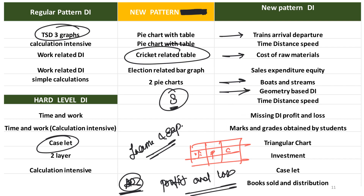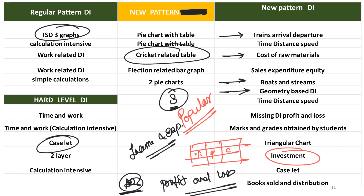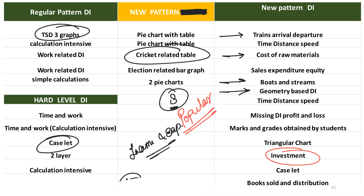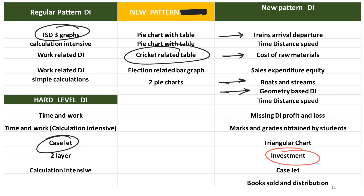There is also the possibility of marks and grades obtained by students — a little typical level, but you never know. Then you have triangular charts. Then you have investment-based questions, which are getting a little bit popular as far as management exams and bank-level exams are concerned. Investment DI is not necessarily easy — the only thing is that the calculations are very heavy, so you have to apply percentages and all of that.